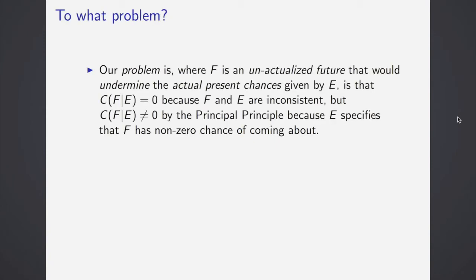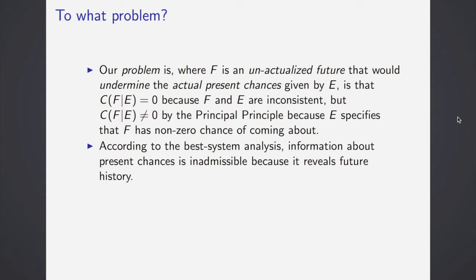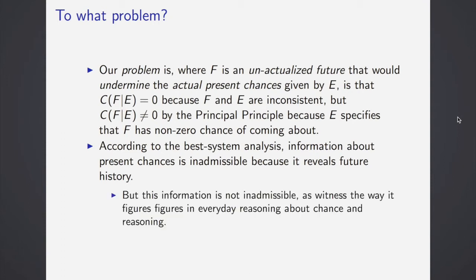But first, to what problem? Let's get some credence functions and some probability functions to really pin down what's wrong about undermining. Our problem is where F is an unactualized future that would undermine the actual present chances given by E, that the credence function, that is, what tells you what you should believe, or what credence you should put in some event happening of F given E, it's going to be equal zero because F and E are inconsistent. But the credence of F happening given E is going to be non-zero by the principal principle because E specifies that F is a non-zero chance of coming about. According to the best system analysis, information about present chances is inadmissible because it reveals future history. But this information is not inadmissible as witness by the way it figures in everyday reasoning about chance. So we've got a contradiction.